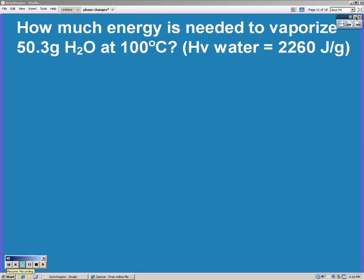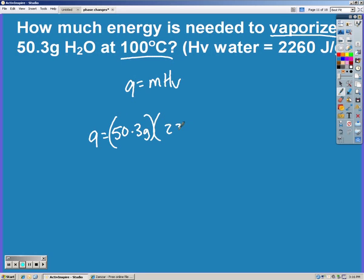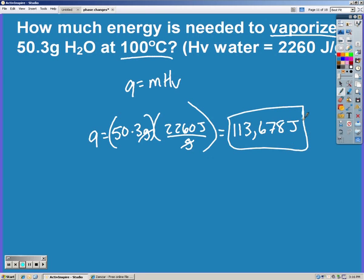So on this problem we are vaporizing that same amount of water at a hundred degrees Celsius. So since it's just being vaporized, we use q = m·Hv. We know our mass and we know our Hv, or heat of vaporization. Grams cancel out, and we're left with 113,678 joules.